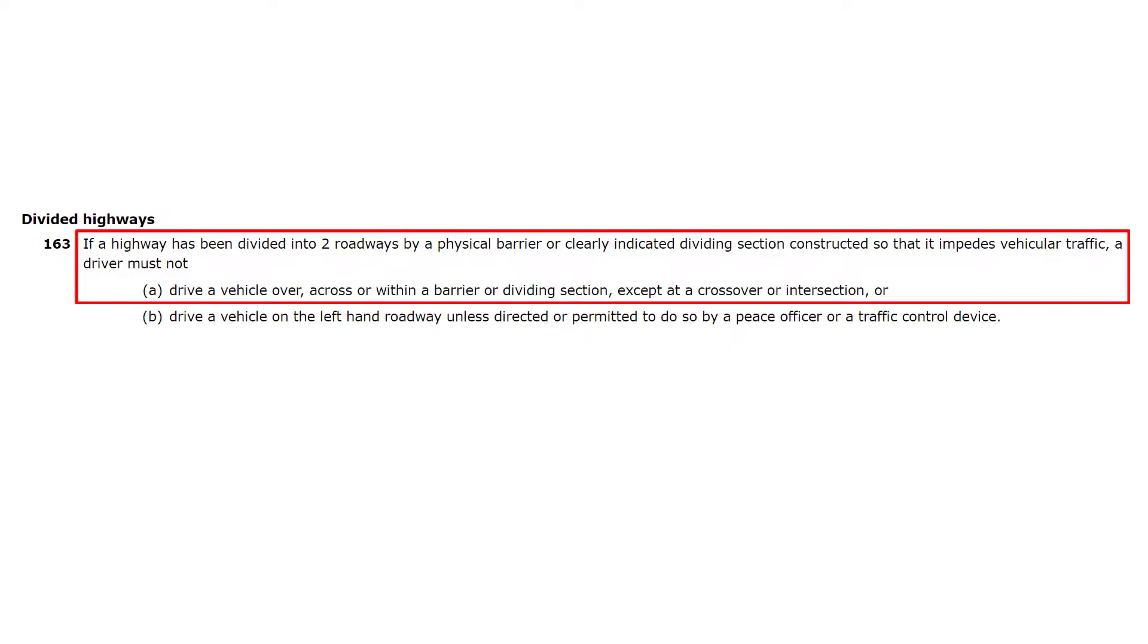if a highway has been divided into two roadways by a physical barrier or clearly indicated dividing section constructed so that it impedes vehicular traffic, a driver must not drive a vehicle over, across, or within a barrier or dividing section, except at a crossover or intersection.